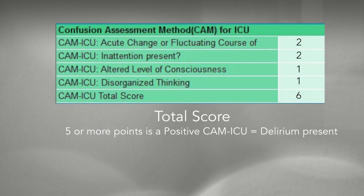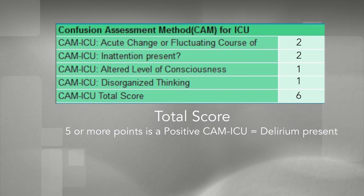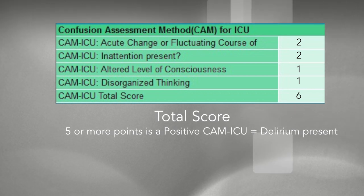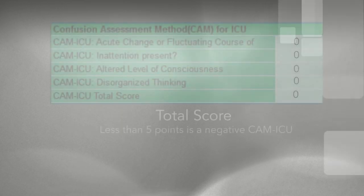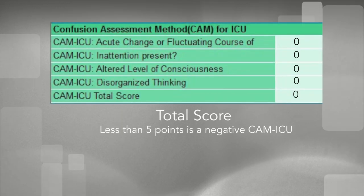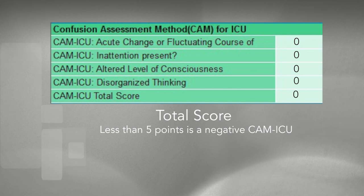After the assessment, score the patient. A total score of 5 points or more is considered a positive CAM-ICU assessment and delirium is present. If the patient scores less than 5 points, it is considered a negative CAM-ICU assessment and delirium is not present.